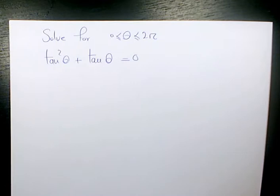In this video I want to show you how to solve this trigonometric equation, which is tan squared theta plus tan theta equals 0. And we need to solve it for theta, which is changing from 0 to 2 pi.